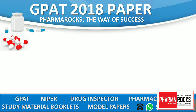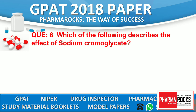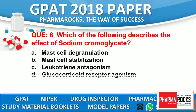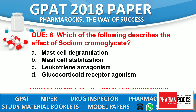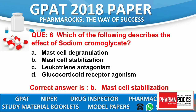Question number 6: Which of the following describes the effect of sodium cromoglycate? Option A: Mast cell degranulation. Option B: Mast cell stabilisation. Option C: Leukotriene antagonism. Option D: Glucocorticoid receptor agonism. The correct answer is B — mast cell stabilisation describes the effect of sodium cromoglycate.